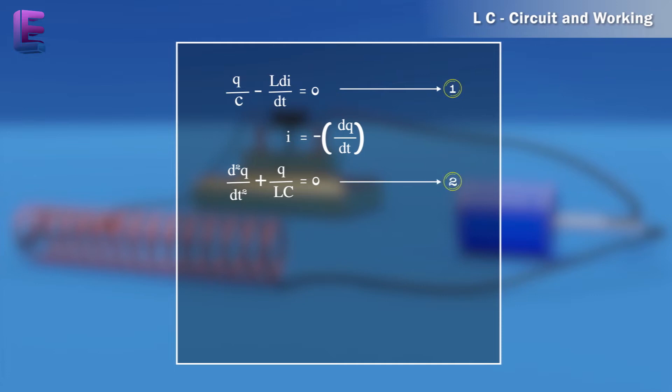As this equation is similar to the equation for a simple harmonic oscillator, d square x by dt square plus omega nought square x equals 0, the charge on the capacitor therefore oscillates with a natural frequency omega nought equals 1 by root LC. This is the frequency of an LC circuit.